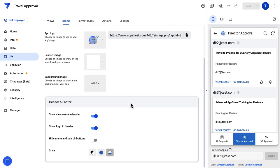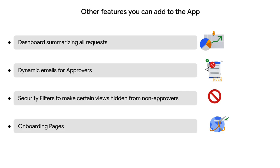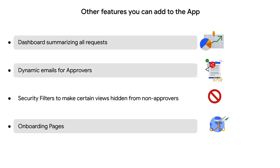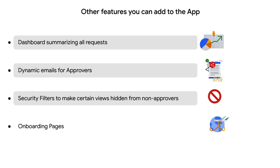Lastly, I made some branding changes. Apart from the features we added so far, you could add additional features to the app. Some of these could be a dashboard summarizing all the requests. You could even add dynamic emails for approvers so that they can approve or reject a request right from their email. You could add security filters to make certain views hidden from non-approvers, or add onboarding pages that provide instructions on how to use the app. We also have the chat apps public preview going on right now, so feel free to explore chat apps in the context of this app. I hope the tutorial was helpful. You can find links to the template and the source file in the description. If you have any questions, feel free to post them as comments here or in the community. Thank you.